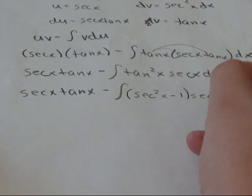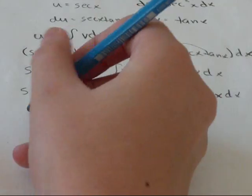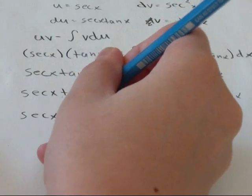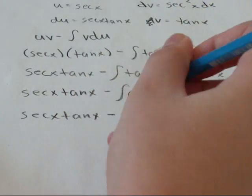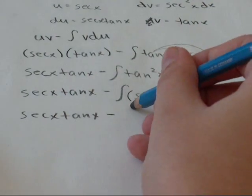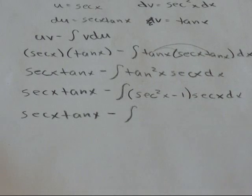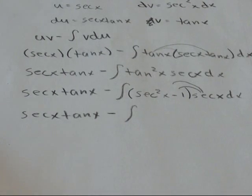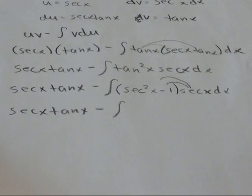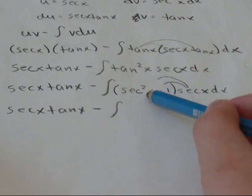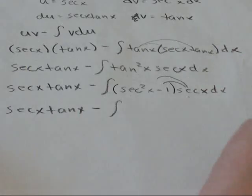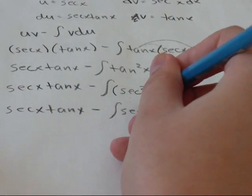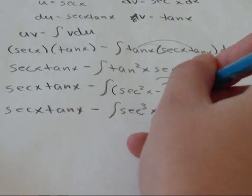Times, we're going to bring along secant x dx. So secant x tan x minus the integral. And I'm going to distribute the secant x into both terms. So minus the integral secant squared x times secant x dx. We're going to get secant cubed x dx.